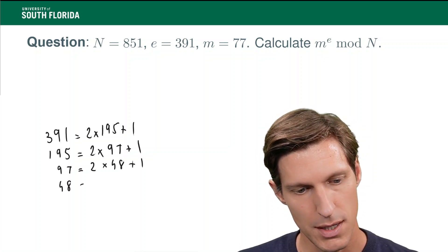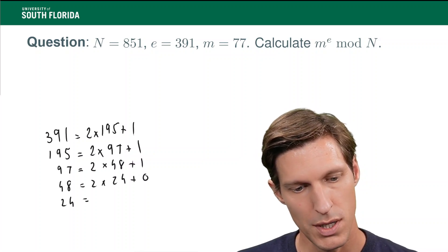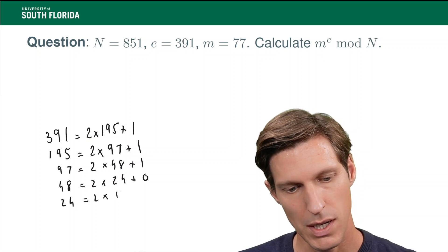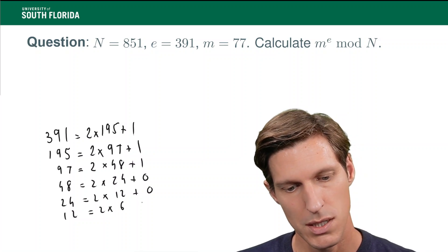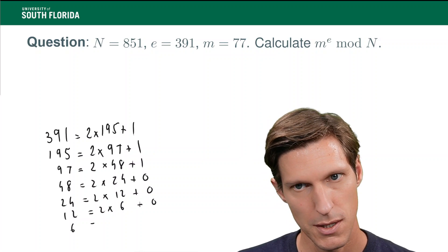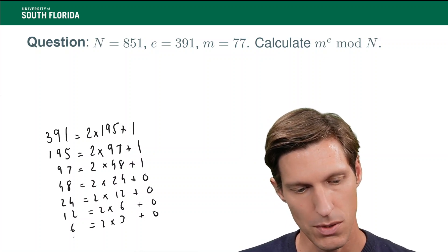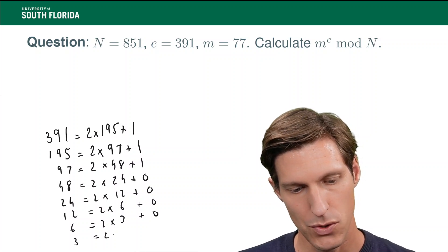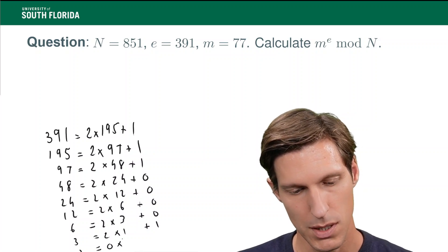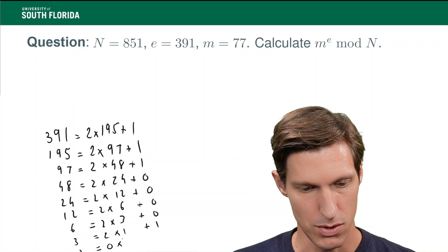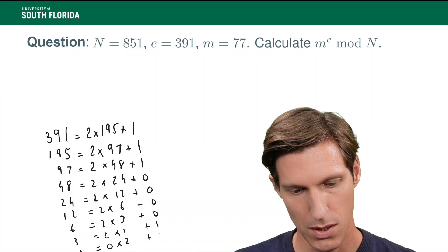Now, 48 is two times 24 plus zero. 24 is two times 12 plus zero. 12 is two times six plus zero. Six is two times three plus zero. Three equals two times one plus one. And one equals two times zero plus one.